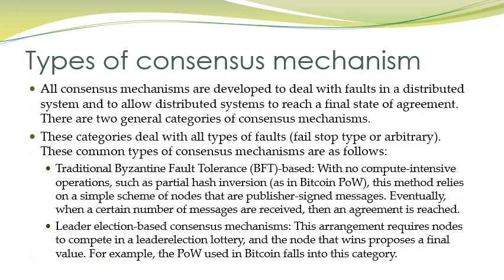All consensus mechanisms are developed to deal with faults in a distributed system and to allow the distributed system to reach a final state of agreement. The ultimate goal is that all nodes come to a final decision and agree on some state of the system. There are two general categories of consensus mechanisms that deal with all types of faults. Most consensus algorithms are categorized into these two broad types.